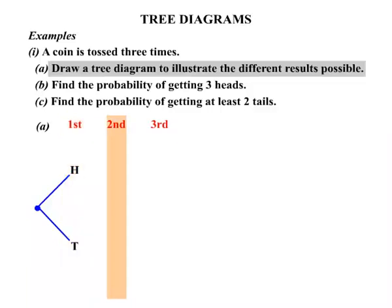Now the second throw. Well let's say our first throw was a head. On the second throw we could get a head or a tail. If on the other hand our first throw was a tail, our second throw could also be a head or a tail.